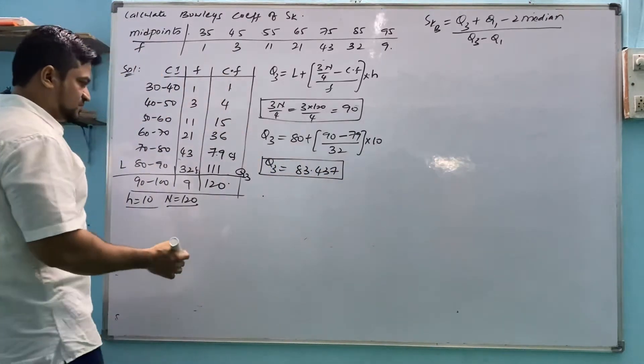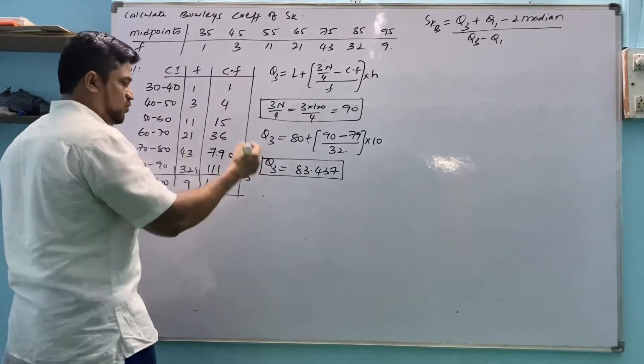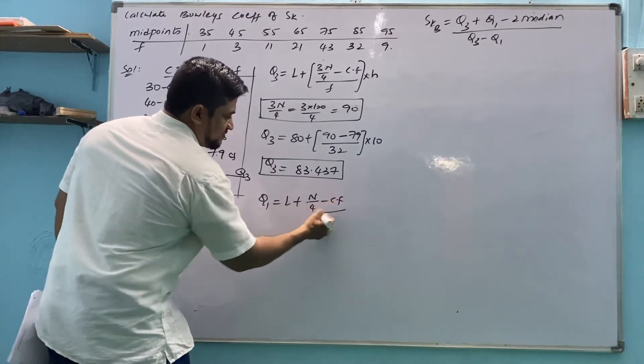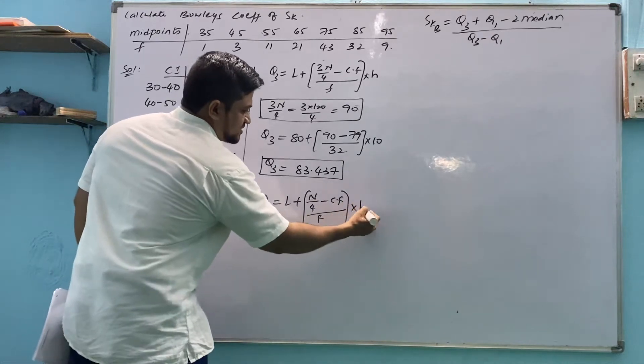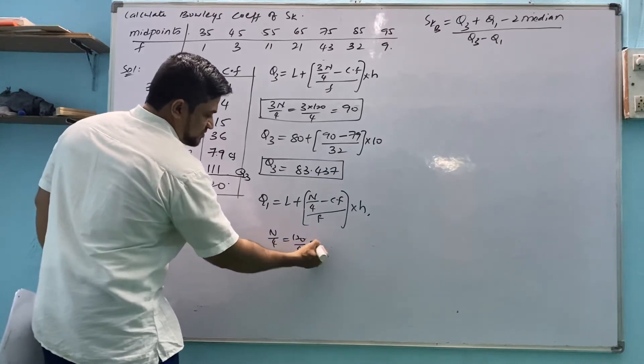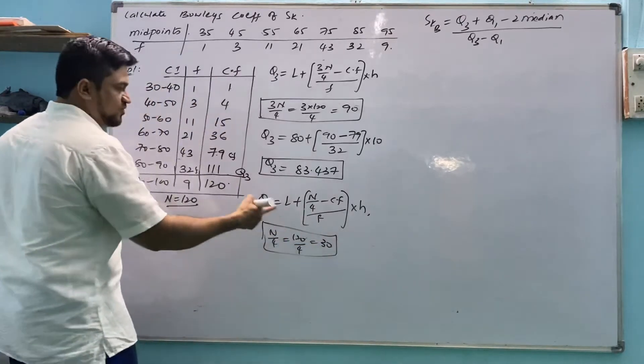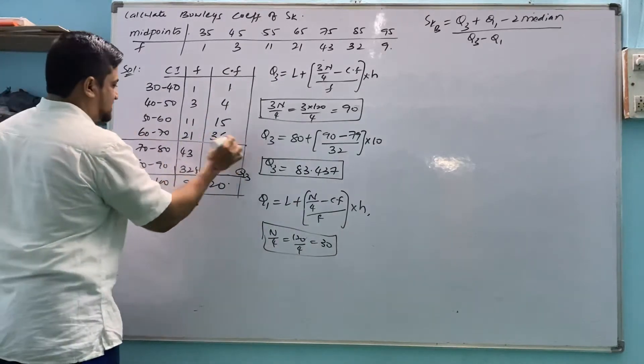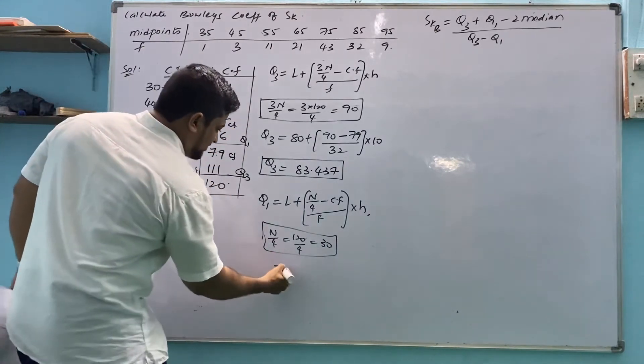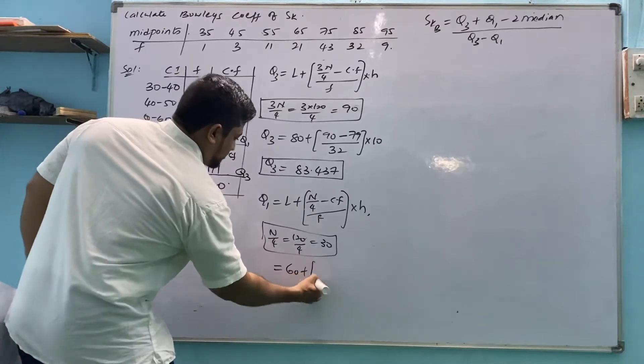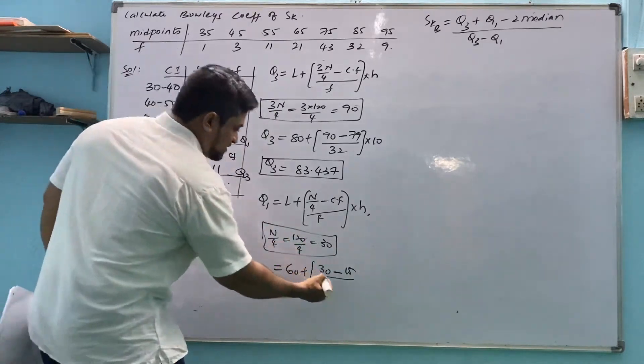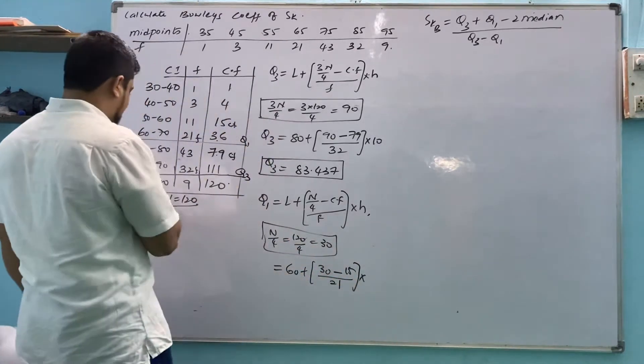Once we got Q3 value we have Q1: l plus n by 4 minus cf by small f into h. So n by 4 we will calculate now. n by 4, 120 by 4, 30. Once we got n by 4, then n by 4 we will check here. It lies in 36. So this is l, this is f, this is cf for Q1. So what we have? l is 60 plus n by 4 which is 30 minus cf opposite upper value which is 15 by 21 into h. h is 10.